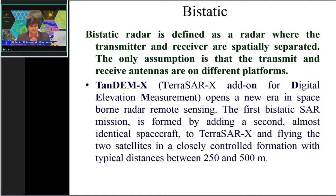Generally, for spaceborne SAR systems, due to limitations of space and power consumption, only one antenna is used, so systems are known as monostatic SAR systems. However, a special case exists with TerraSAR-X and TanDEM-X, twin satellites launched by the German Space Agency. When operated in the same orbit maintaining a baseline distance of 250 to 500 meters, bistatic imaging is possible.